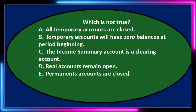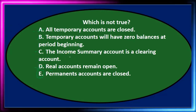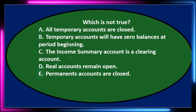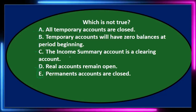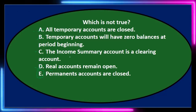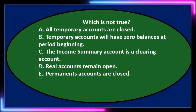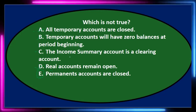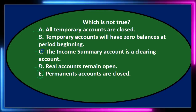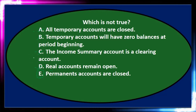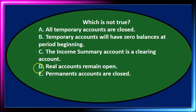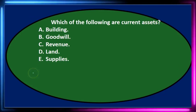The income summary account is a clearing account. It's used in the four-step closing process. It could also be called a temporary account since it's closed at the end, but it really has a zero balance almost within the same day — we only use it during the closing process for one specific purpose. That's why it's more defined as a clearing account. The answer is E: permanent accounts are closed — that is not true.